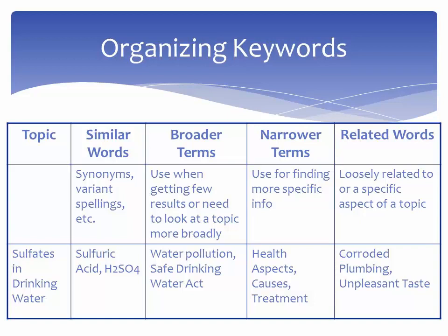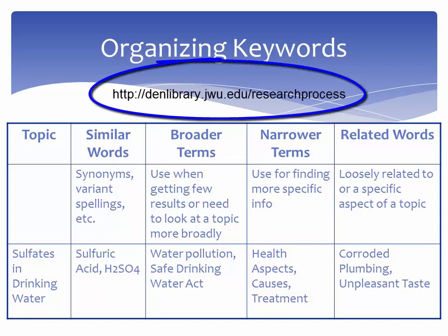A keyword chart is one method for organizing the terminology related to your topic. An example keyword chart can be found under Step 1 on the Library's Research Process Guide at den.library.jwu.edu/researchprocess.